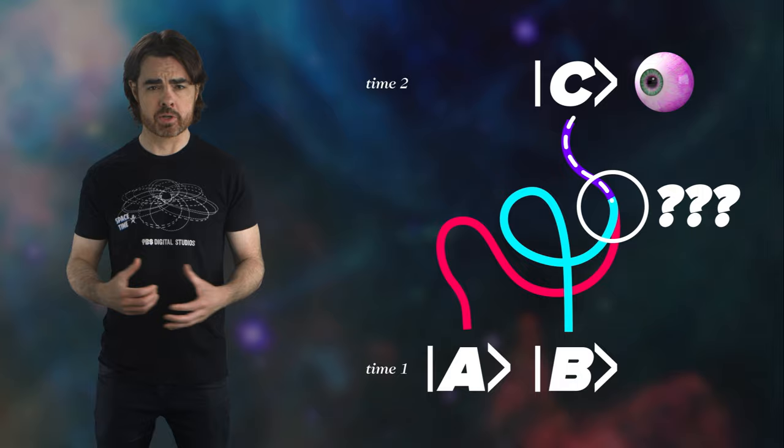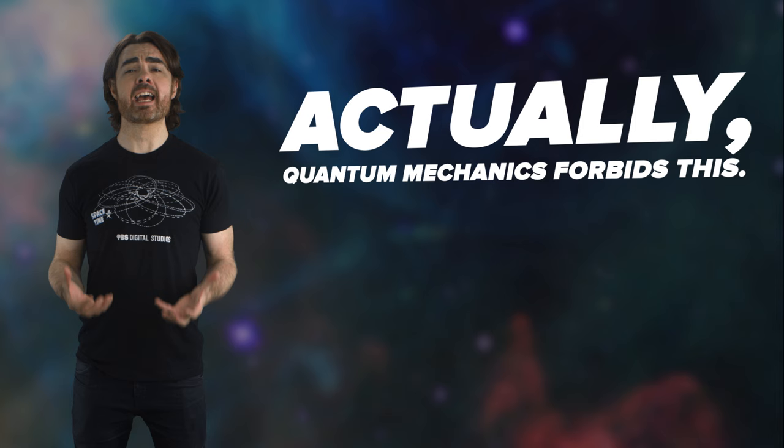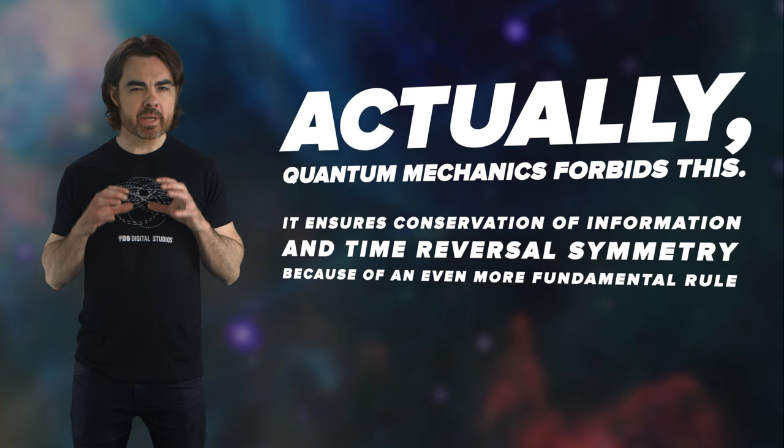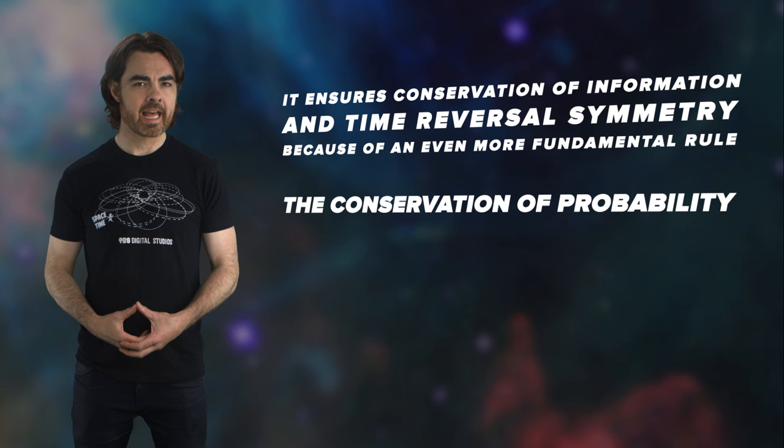So it should be simple enough to erase information, right? We just set things up so our laws of motion force two possible initial states into the same exact final state. Then we wouldn't know what the original state was and information would be destroyed. Actually, quantum mechanics forbids this. It ensures conservation of information and time reversal symmetry because of an even more fundamental rule: the conservation of probability.